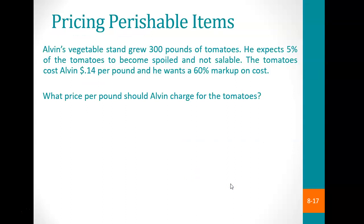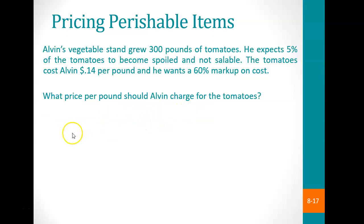Pricing perishable items: when dealing with food items, some items will go bad. Alvin's vegetable stand grew 300 pounds of tomatoes. He expects 5% of the tomatoes to become spoiled and not sellable. The tomatoes cost Alvin $0.14 per pound, and he wants a 60% markup on cost. What price per pound should Alvin charge for these tomatoes?